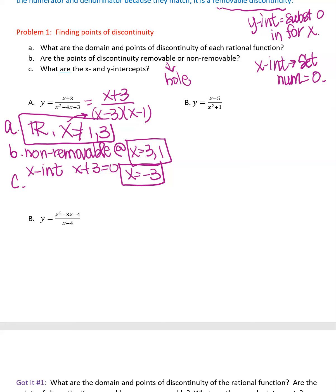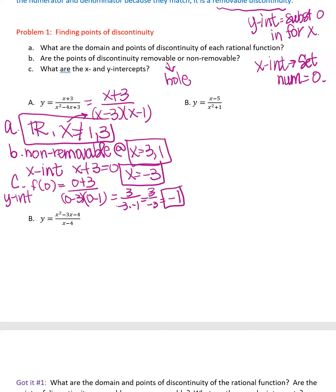For the y-intercept, substitute x = 0 into the entire expression. We get f(0) = (0 + 3)/((0 − 3)(0 − 1)) = 3/(−3 × −1) = 3/3... wait, that gives negative 1, but with two negatives in the denominator it's actually positive 1. So the y-intercept is 1.